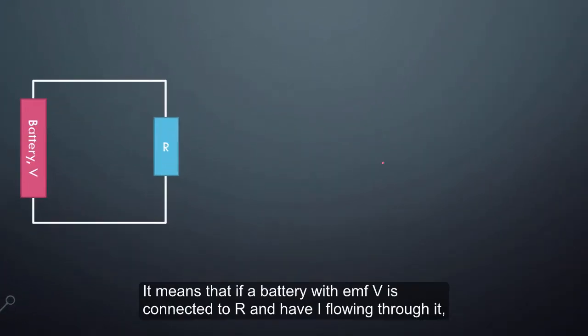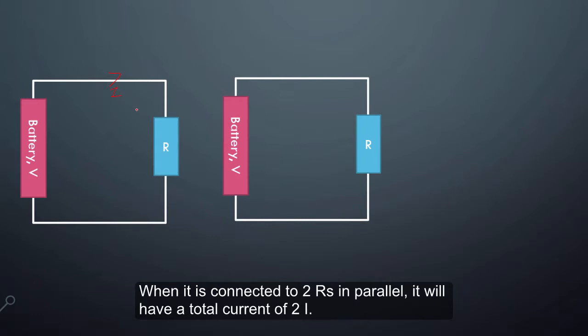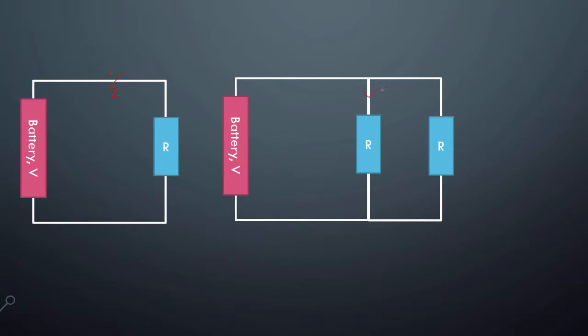It means that if a battery with EMF of V is connected to R, you will have a certain I flowing through. When it is connected to two resistors in parallel, you will have a total current of 2I. Because this will have current I and this will have current I.